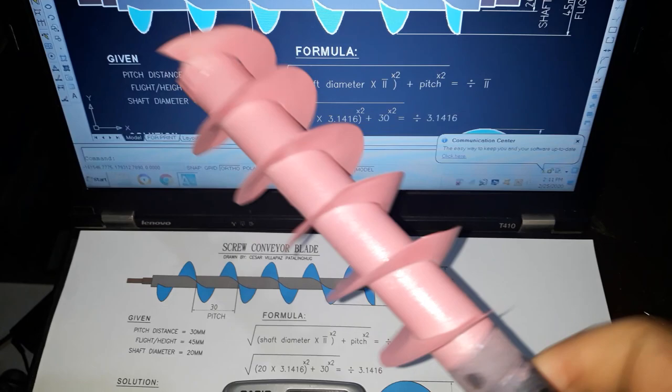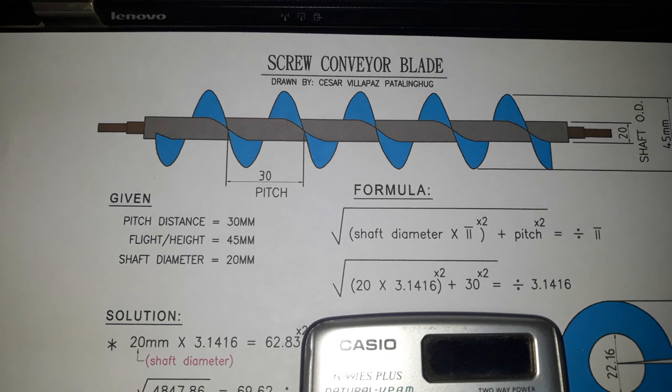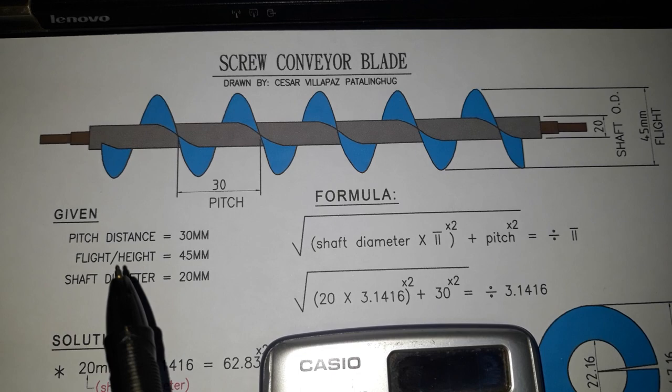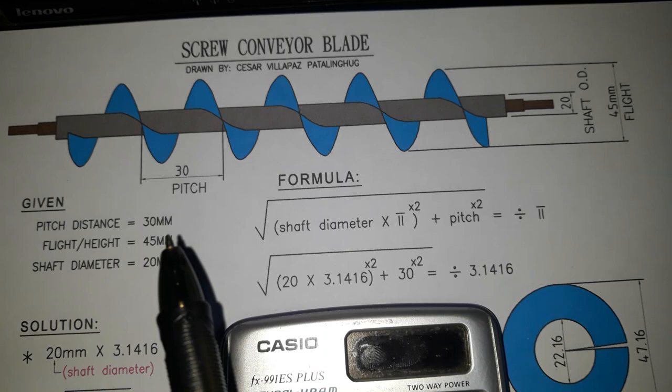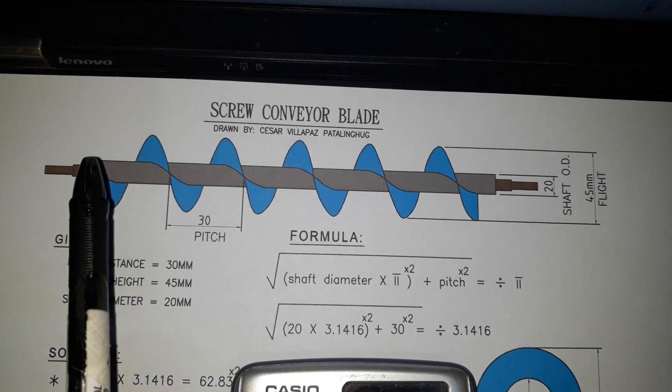This is an example of a screw conveyor blade and this is the drawing. In this drawing we have three given dimensions: a pitch distance, a flight or height, and a shaft diameter. The pitch is 30mm, the flight is 45mm, and the shaft is 20mm.